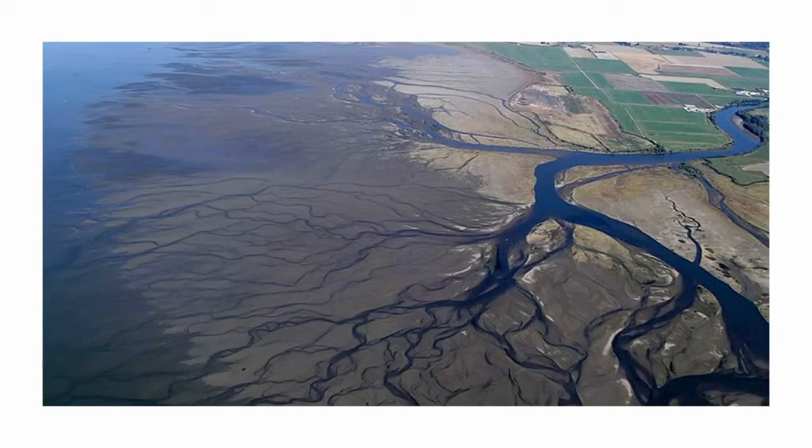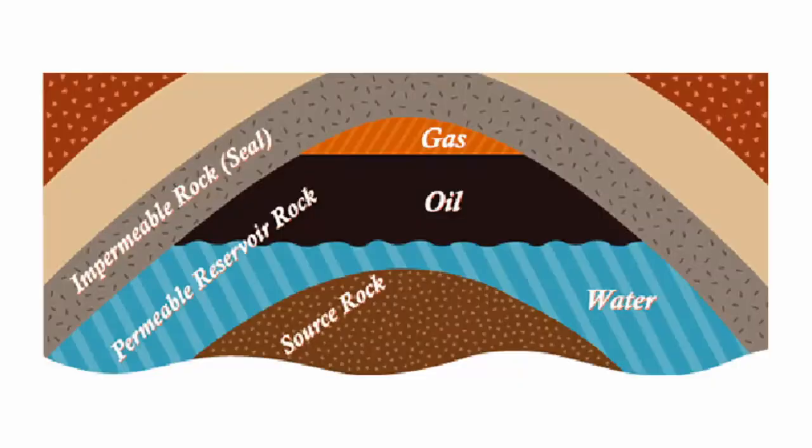It is also noteworthy that convolute bedding scenarios are perfect for hydrocarbon reservoirs, as shown in the diagram here. Their deformation creates appropriate anticlines, and the sandstone-shale sequence creates the desired source rock, reservoir rock, and seal combination. Thank you very much for listening.